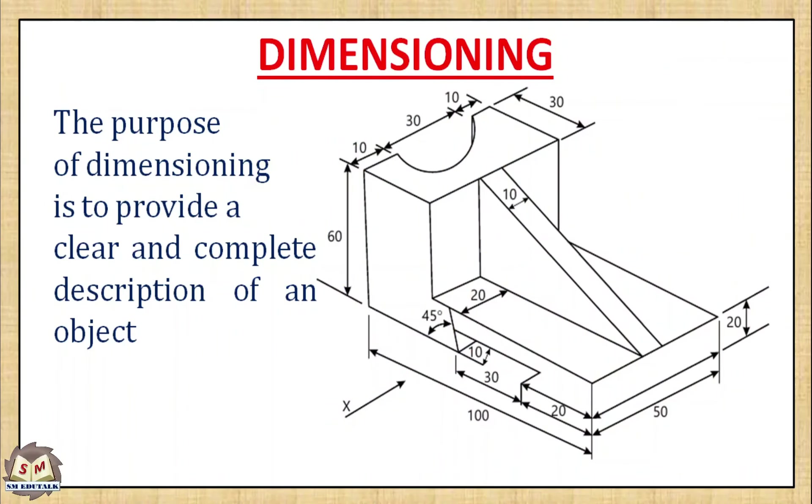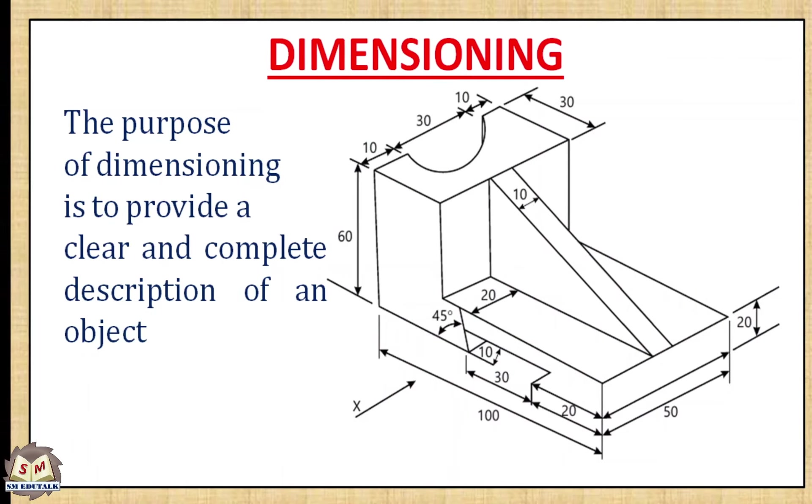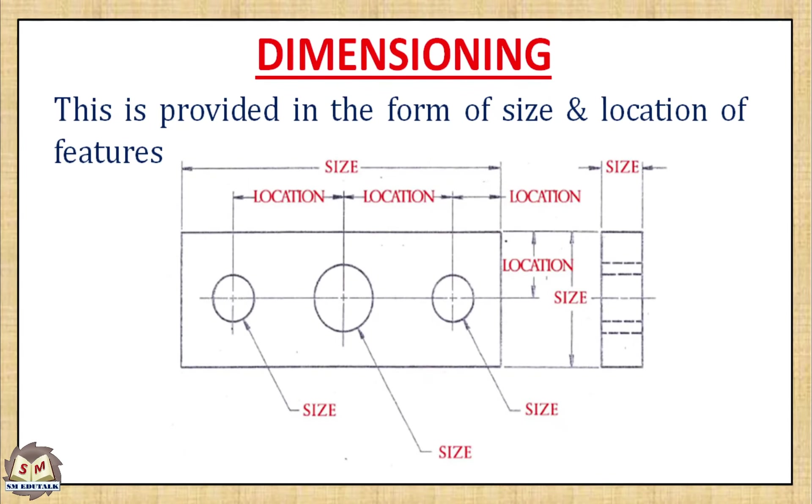The purpose of dimensioning is to provide a clear and complete description of an object. This is provided in the form of size and location of features. Size means length, width, height, etc. Location means position of a feature like a hole with reference to other object or surface or edge.